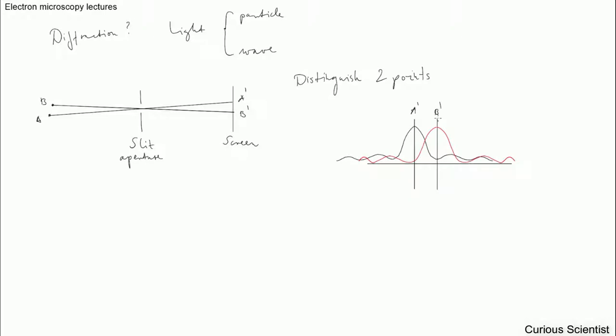Now there will be a diffraction pattern. This is the intensity of the two lights here. This is basically the intensity for the diffracted waves. This is the screen's surface.